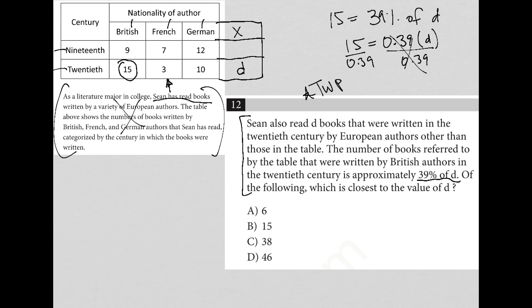That cancels out on that side. I grab my calculator, and let's see, I have 15 divided by 0.39, which is 38.46, with a few other numbers, is equal to D.